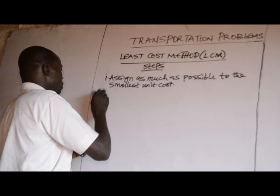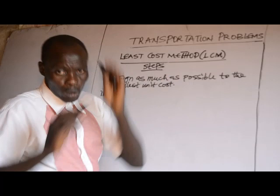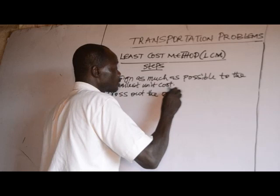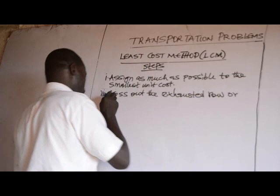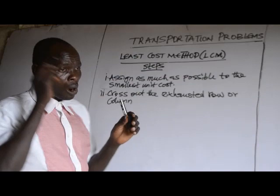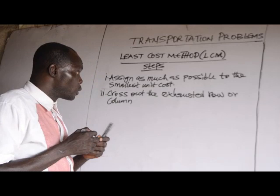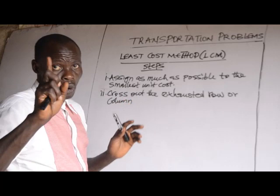Step number 2: cross out the exhausted row or column. Any row or column that has been exhausted, you cross it out. If both a row and column are exhausted simultaneously, only one should be crossed out — not the two at the same time.